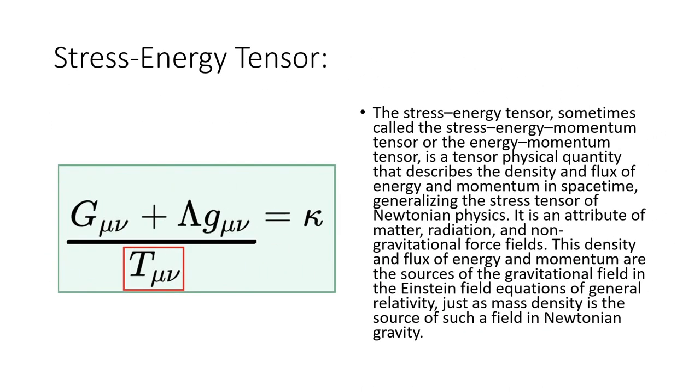Stress-energy tensor. The stress-energy tensor, sometimes called the stress-energy momentum tensor or the energy momentum tensor, is a tensor physical quantity that describes the density and flux of energy and momentum in space-time, generalizing the stress tensor of Newtonian physics. It is an attribute of matter, radiation, and non-gravitational force fields. This density and flux of energy and momentum are the sources of the gravitational field in the Einstein field equations of general relativity, just as mass density is the source of such a field in Newtonian gravity.